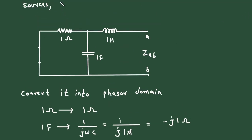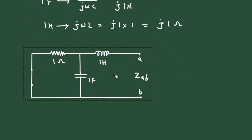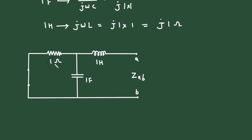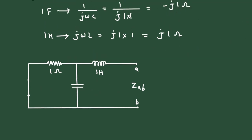Now again, if we redraw this circuit. Then this 1 ohm will remain same. This 1 farad will change to minus j1. This 1 henry will change to j1 ohm.